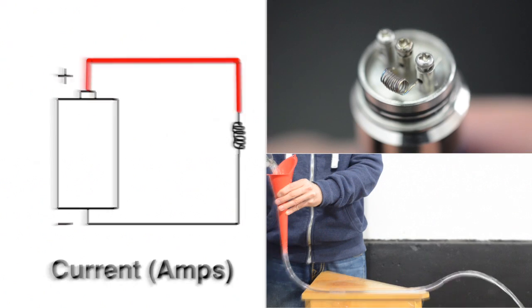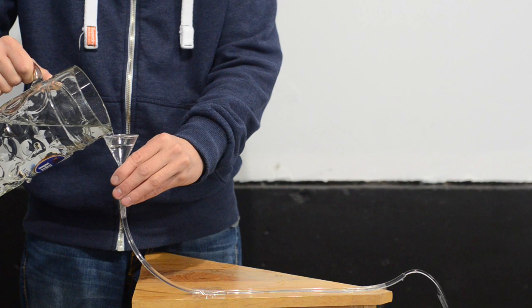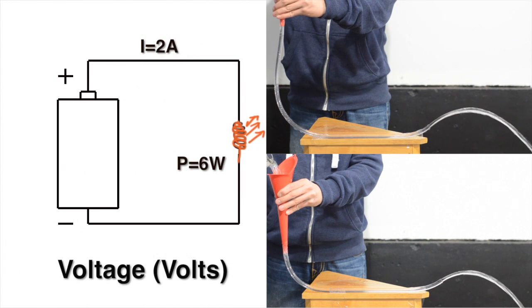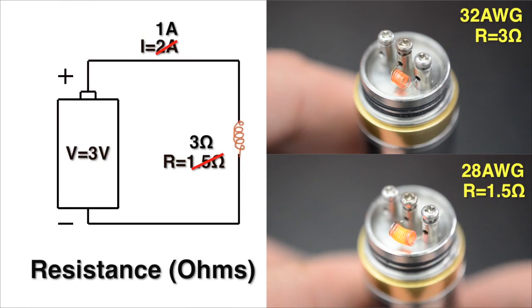In the watts, amps, ohms and volts video, I explained how current and resistance is like water flowing through a hose. Now, I'll use those concepts to show how dual parallel coils work.